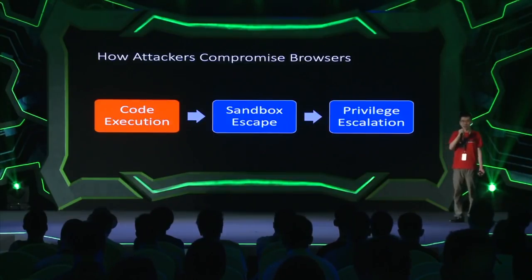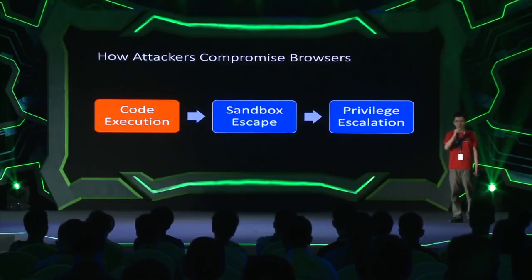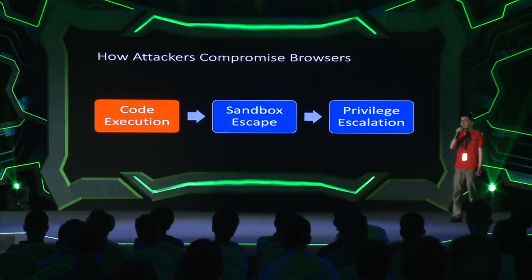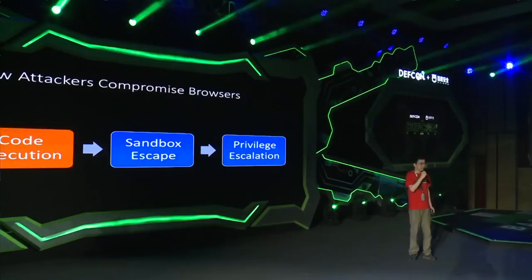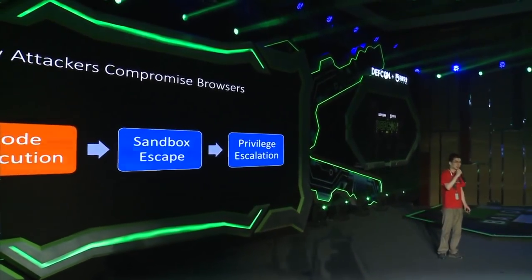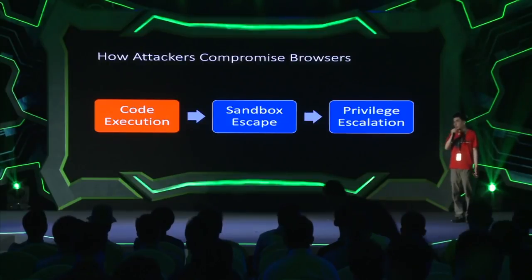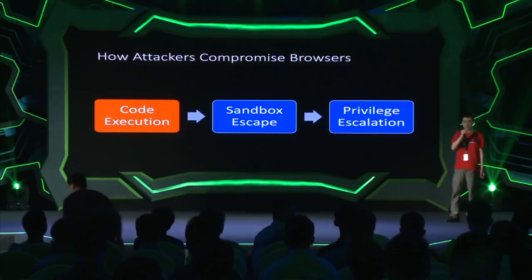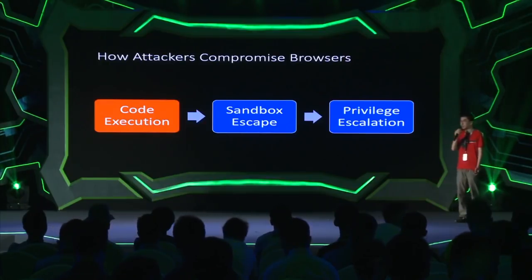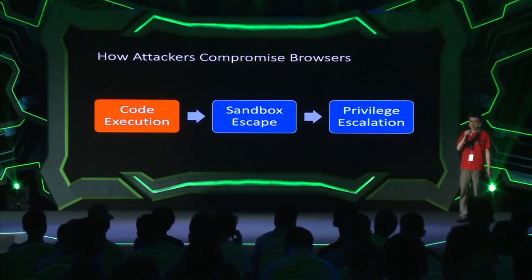Normally, an attacker compromises a browser by first gaining code execution in a renderer process — that's the process that parses the webpage and executes JavaScript code. Then the attacker needs to use another vulnerability to escape from the renderer sandbox, which gets the attacker normal user privilege on the target system. The attacker can optionally use another bug to escalate to kernel or system privilege, gaining full compromise of the target system.